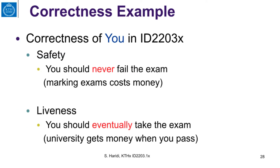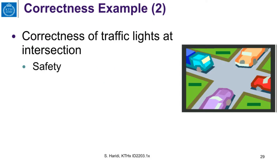Here is an example not related to distributed algorithms — it's about you as a student and the correctness of your participation in this course. Safety says that you should never fail the exam; making exams costs universities money, so the bad event is you failing. The liveness property says that you should eventually take the exam, so by taking the exam a good event happens and the university gets some money.